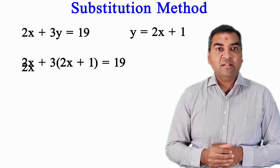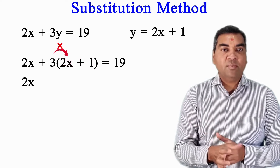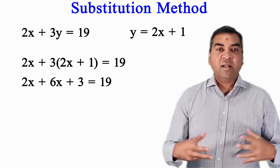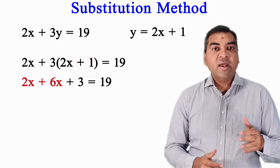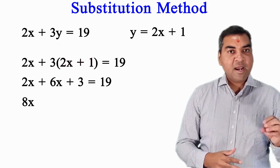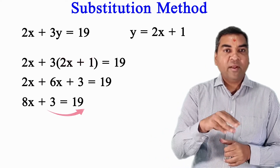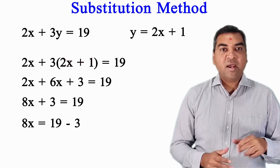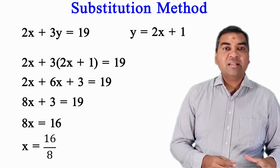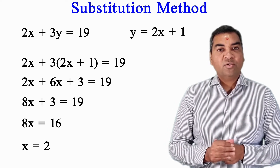Now simplify by expanding the bracket: 2x stays as is, 3 multiplied by 2x gives 6x, and 3 multiplied by 1 gives 3. Next, collect the like terms: 2x plus 6x is 8x. So the equation becomes 8x plus 3 equal to 19. Move the 3 to the other side: 8x equal to 19 minus 3, so 8x equal to 16.